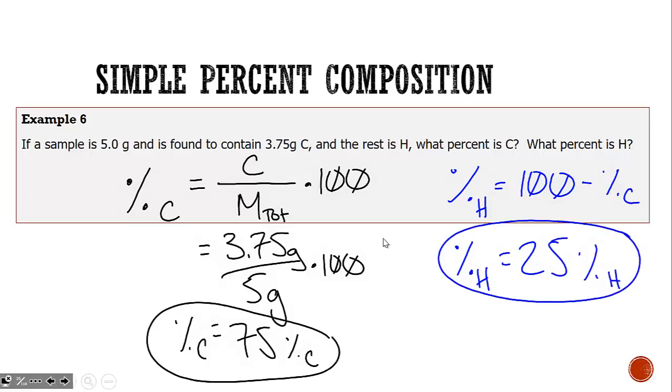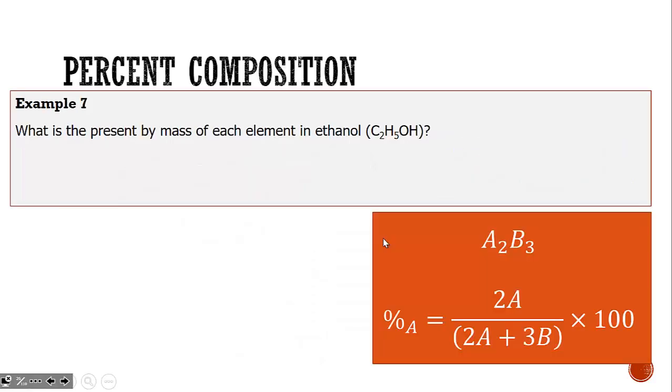That's fairly straightforward, but most of the time, percent composition problems simply provide you the compound's formula. For example, I have ethanol (C₂H₅OH) and I want to know what percentage is carbon, hydrogen, and oxygen.